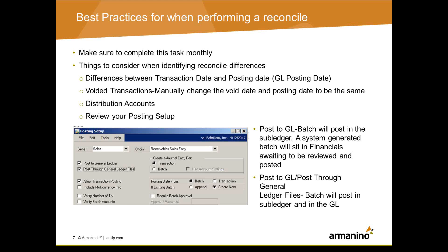Another thing to look at is distribution accounts — a lot of the time, distribution accounts are incorrect on the transactions. Also look at the posting setup. You select the series — for example, sales — and the origin would be receivable sales entry. Make sure that 'post to General Ledger' and 'post through General Ledger' and 'allow transaction posting' are all selected. If 'post to General Ledger' is selected but not 'post through General Ledger,' the batch will post on the subledger but won't post all the way through the GL, leaving a system-generated batch in financials awaiting posting. Also, we recommend defaulting the posting date by batch, not by transaction.